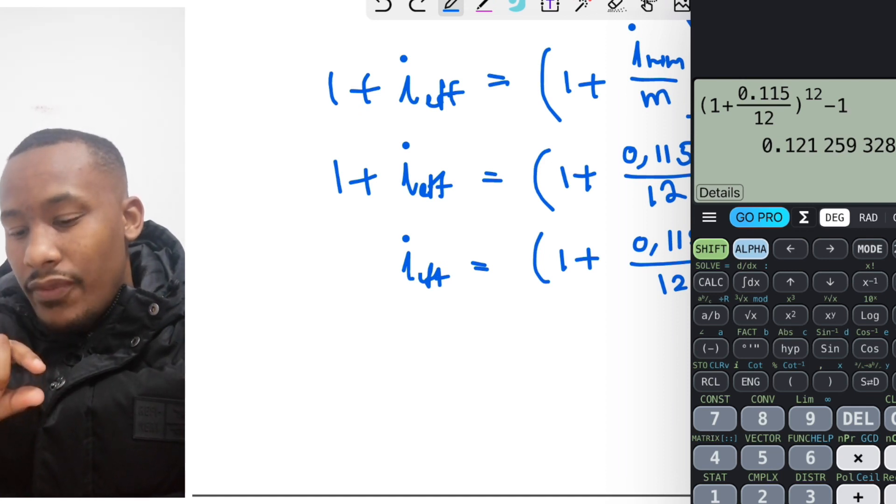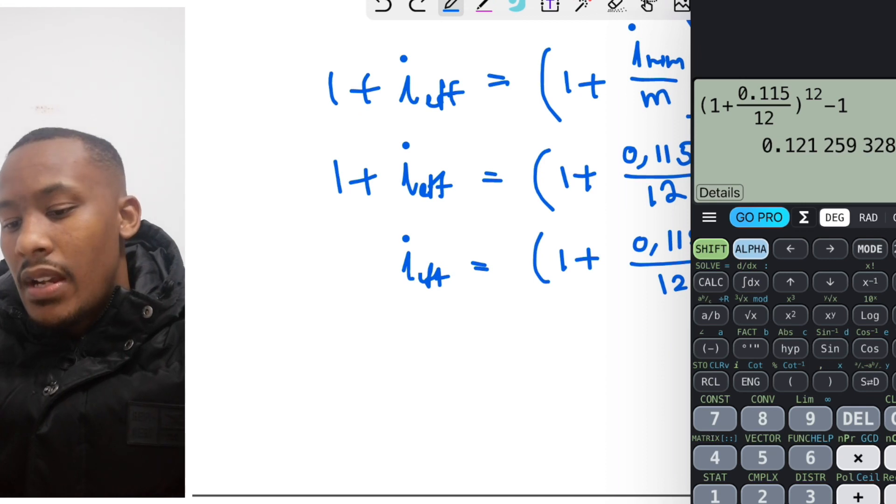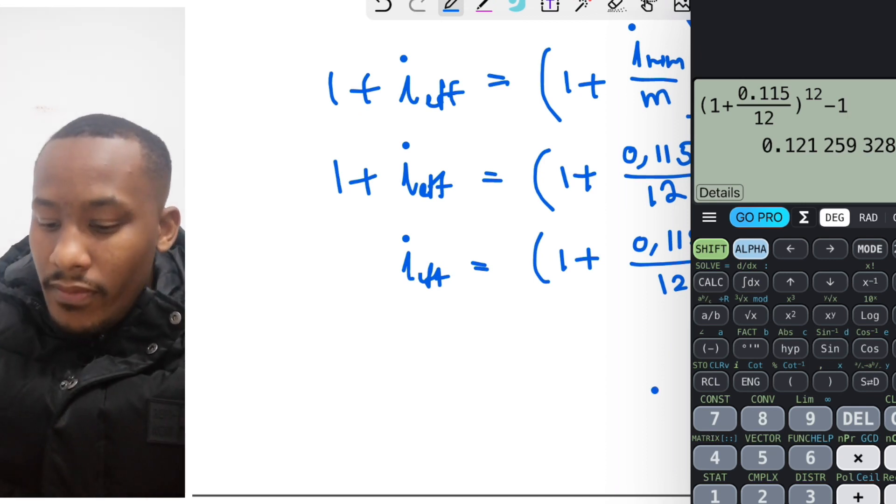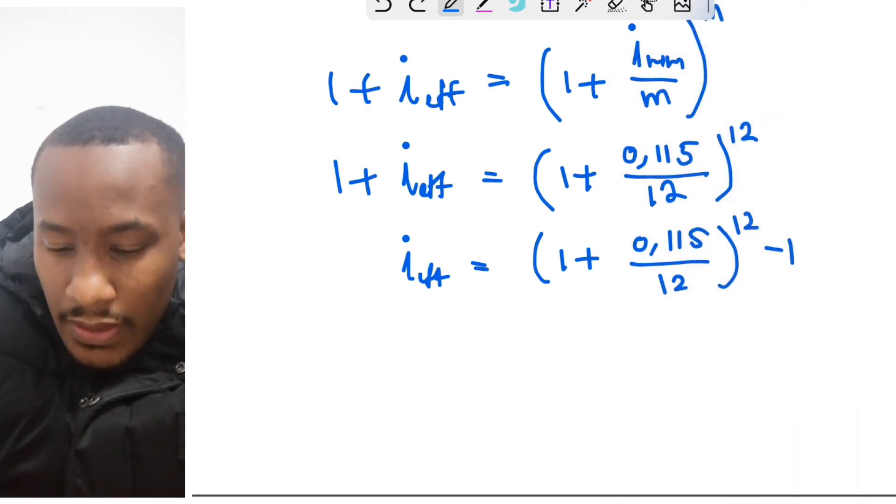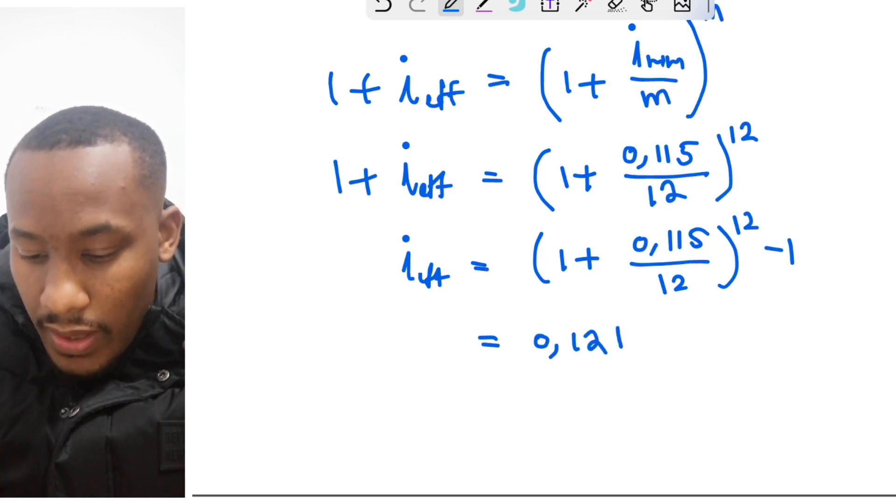So that's your interest rate 0.115 divided by 12 to the power of 12. Subtract 1, convert all of this to a decimal. And so we get 0.12125. Now I want us to write out that first four decimals. Let's round it to the nearest four decimals. That should be 1, 2, 1, 3.